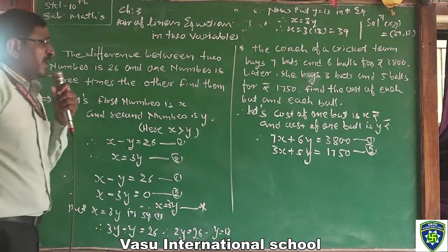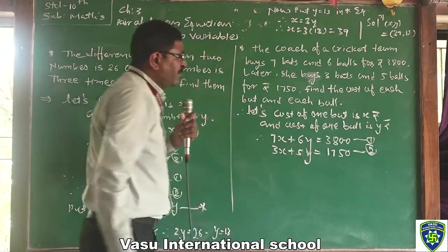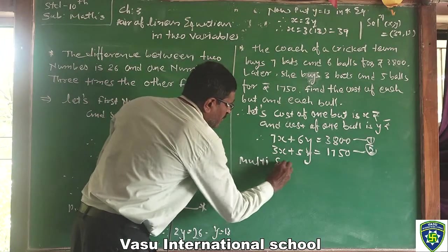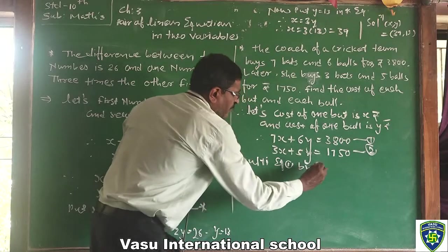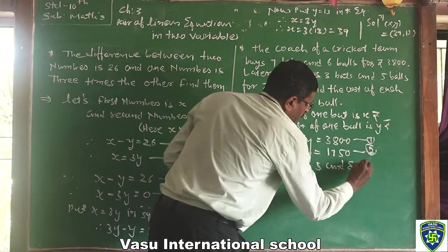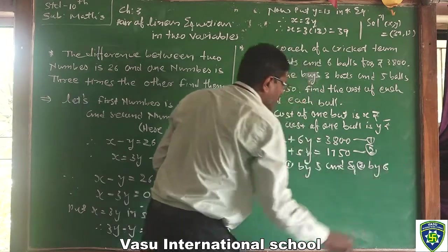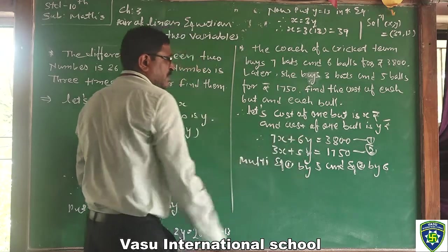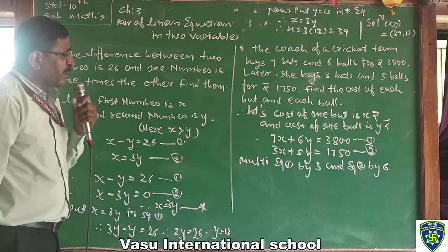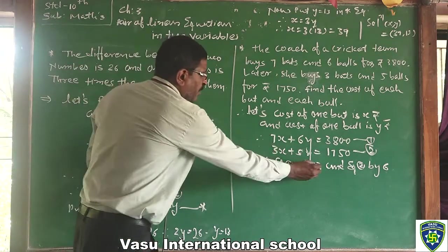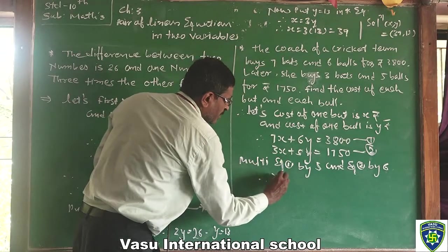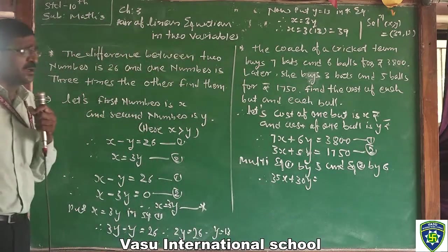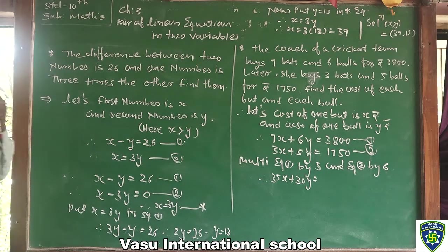The coach buys 7 bats and 6 balls, so 7x plus 6y equals 3800 — Equation 1. He buys 3 bats and 5 balls, so 3x plus 5y equals 1750 — Equation 2. We use the elimination method. Multiply Equation 1 by 5 and Equation 2 by 6 to make the y coefficients equal. Multiplying gives: 35x plus 30y equals 19000.